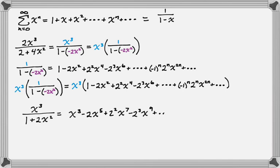So the negative 1 to the n is not impacted. The 2 to the n is not impacted. But now I have x to the 2n times x cubed. So that'll be x to the 2n plus 3. And it goes on forever.